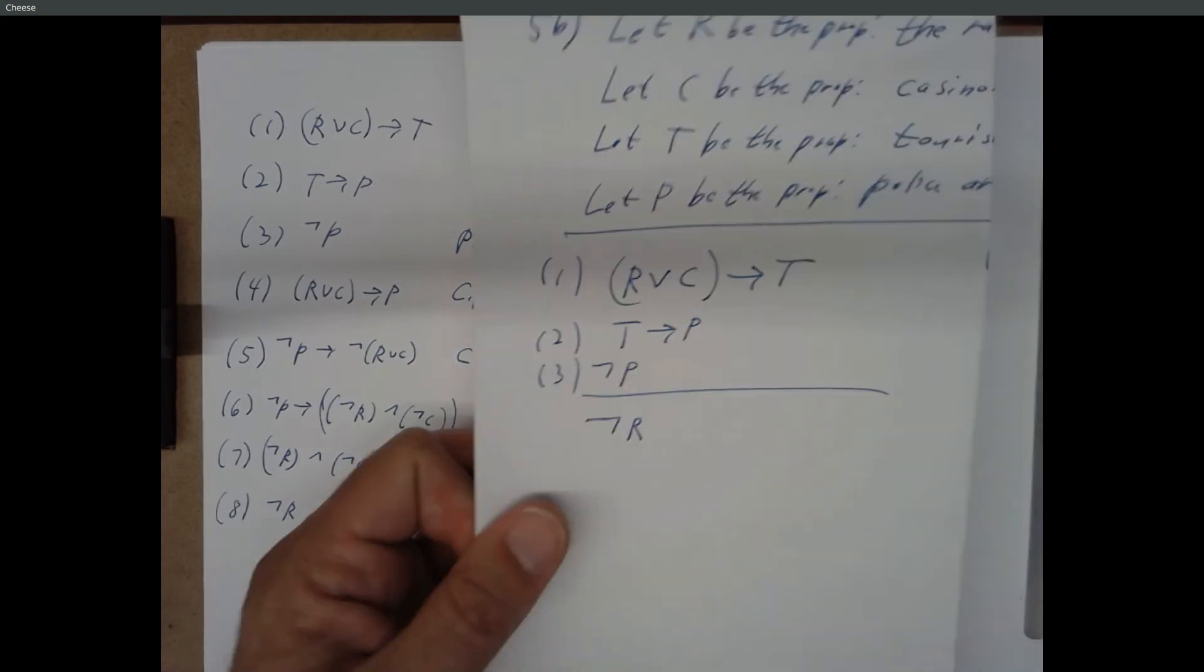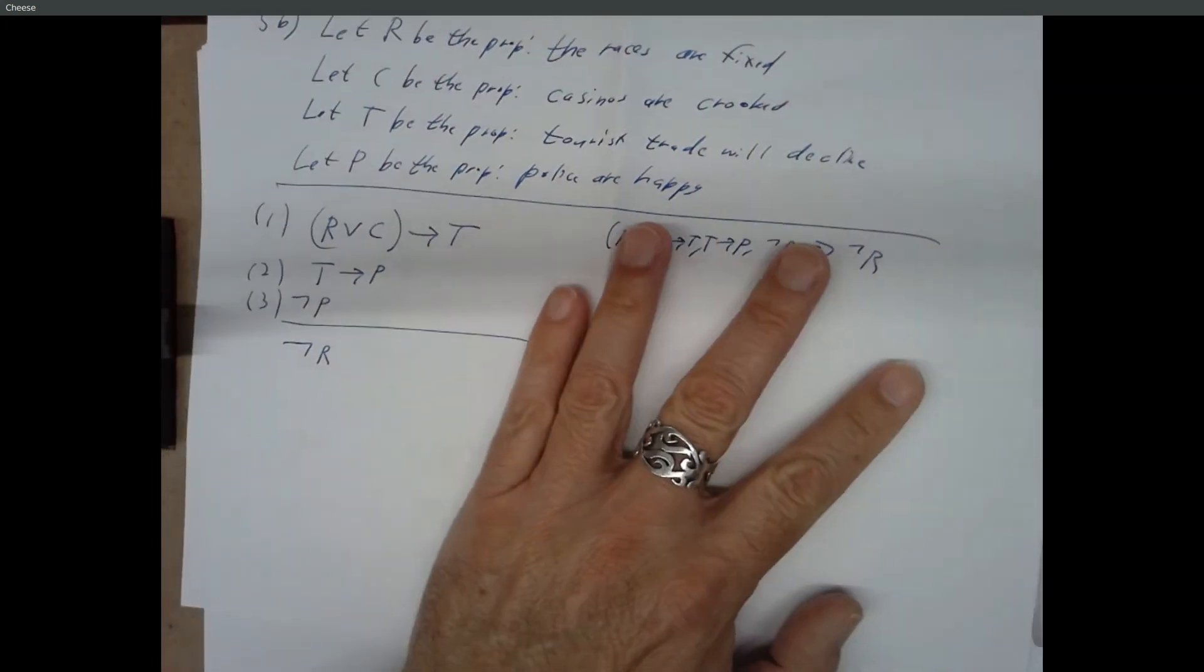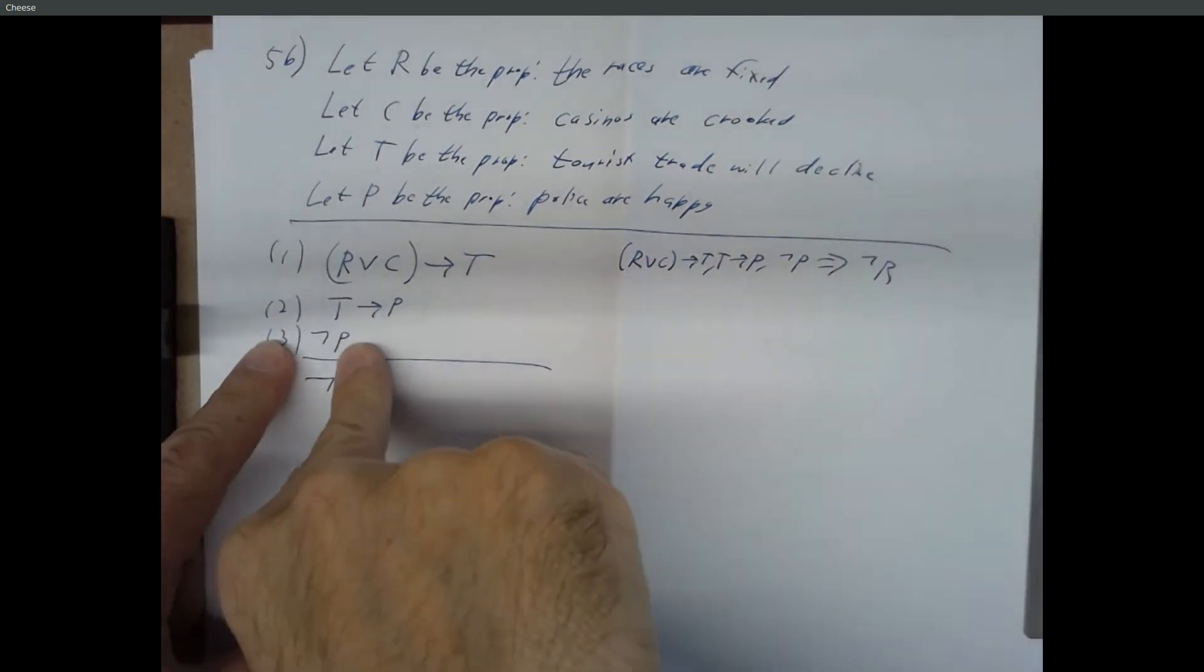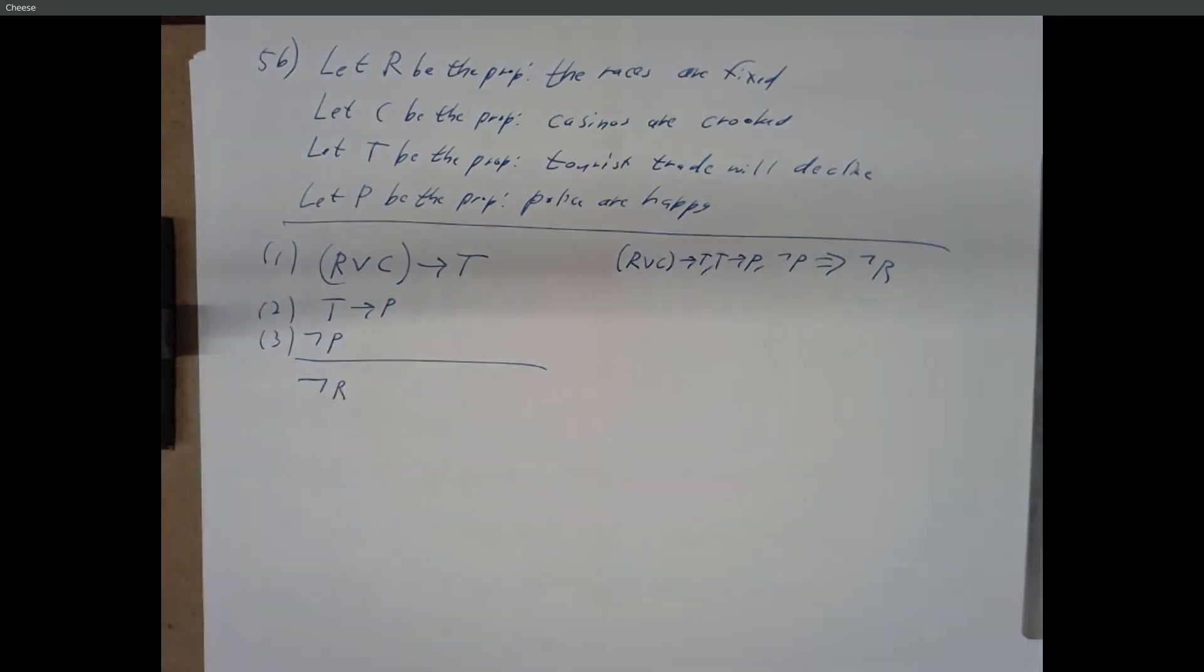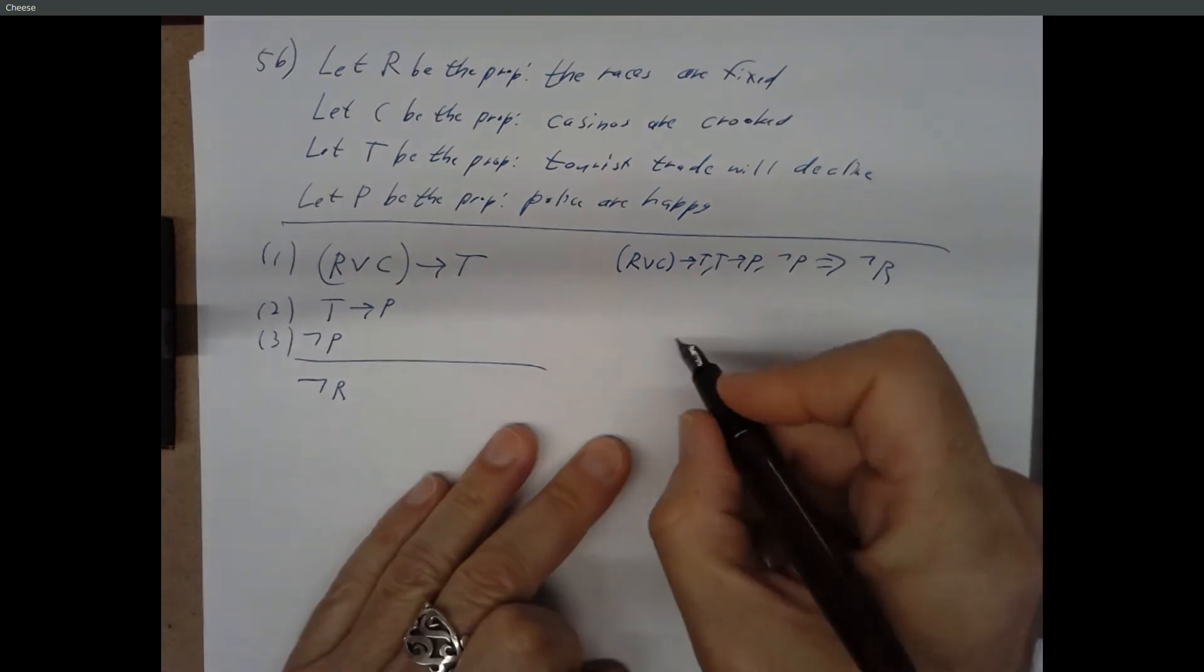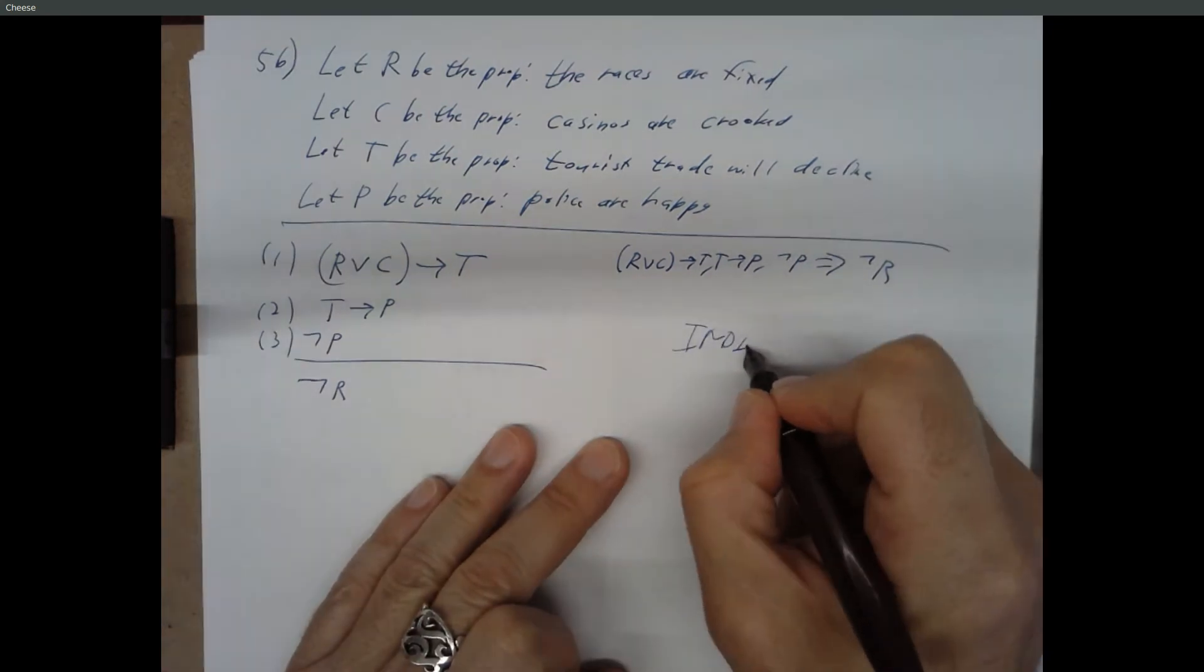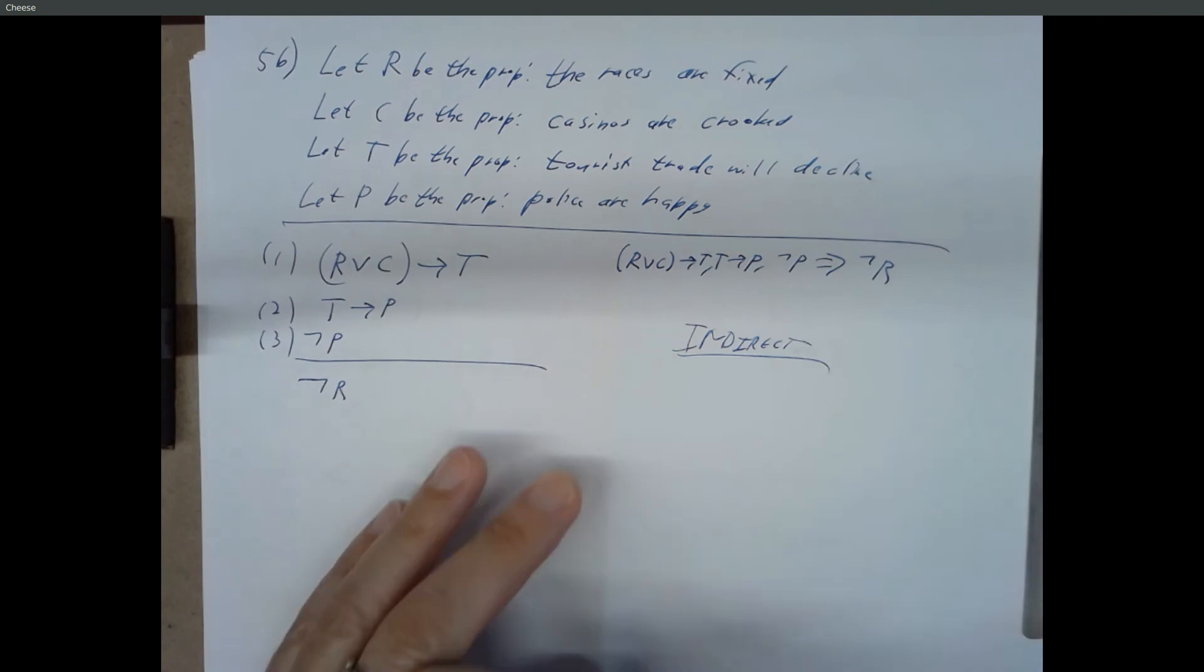Could we show this with an indirect proof? Or a truth table. But usually, when you're asked to show, we're not asking for a truth table proof. We're asking for using rules of logic. But yeah, technically, if we just wanted to prove it, we could use a truth table. Definitely. So, indirect. What's the game plan for an indirect proof in general?